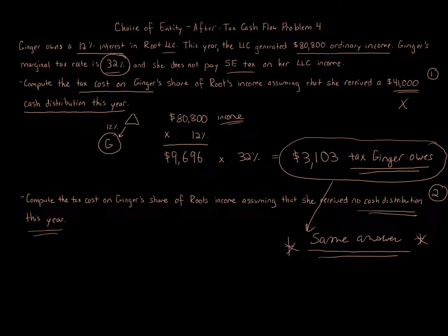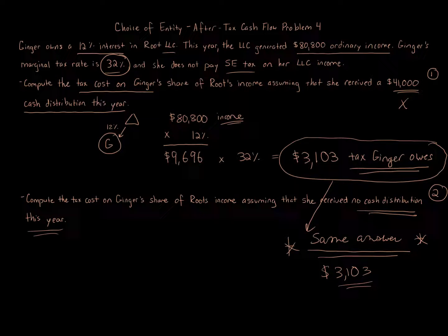Looking at the amount of cash received, that's very limited. Usually you get a distribution that you don't have to pay tax on it. So that is the same number—it's also $3,103, what Ginger owes in that case. The distribution amount does not change the tax cost on the share of income. It has nothing to do with what's going on with the distribution amount.